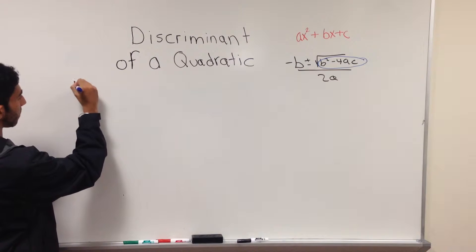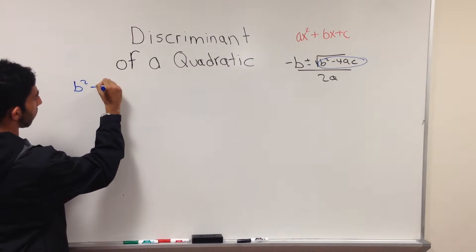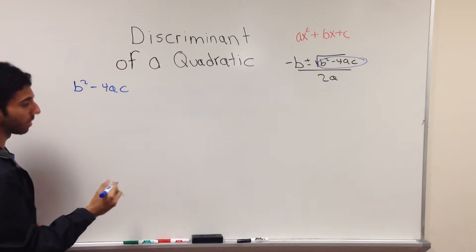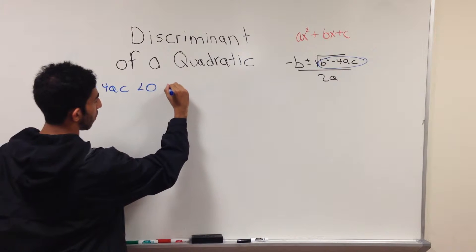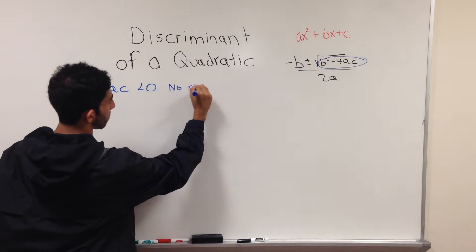The first thing you do is b² - 4ac, which is your discriminant. When it is less than zero, you have no real roots.